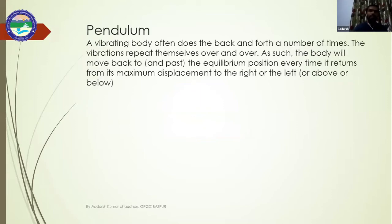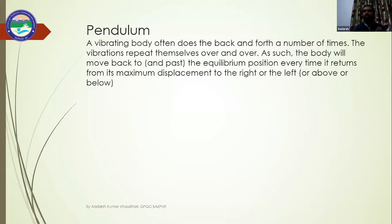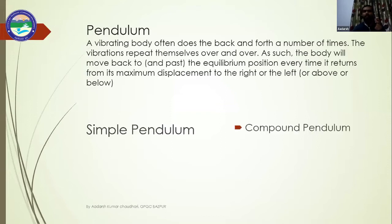A pendulum is a vibrating body that moves back and forth repeatedly. Its variations repeat themselves over and over — the body moves back through the equilibrium position every time it returns from maximum displacement to the right or left. When the time period and frequency remain the same with each repetition, it is a vibrating body. There are two types of pendulum: the simple pendulum and the compound pendulum.